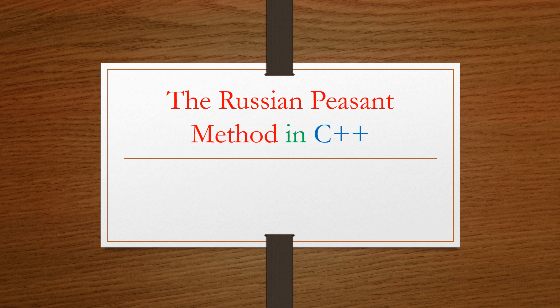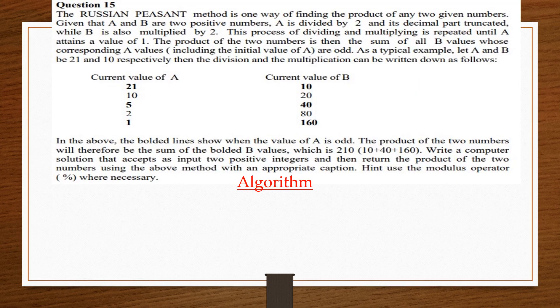Hello everyone, welcome to Dennis Simplifies. Today we are going to look at how to use the Russian peasant method to find a product of any two given numbers in C++. As usual, we are first going to write the algorithm and then use the algorithm to model our code in C++. So let's simplify.